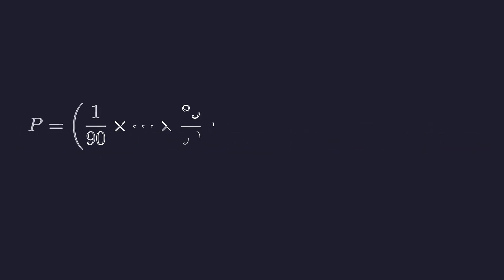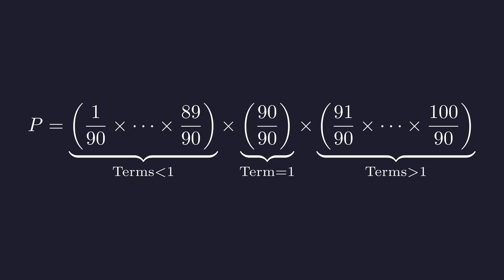The key is to understand the different types of terms within this product. We can split p into three distinct groups: terms whose value is less than 1, a single term equal to 1, and terms greater than 1. The entire question boils down to this.